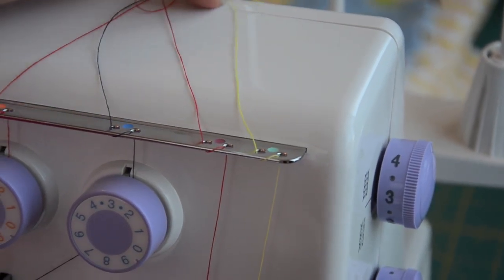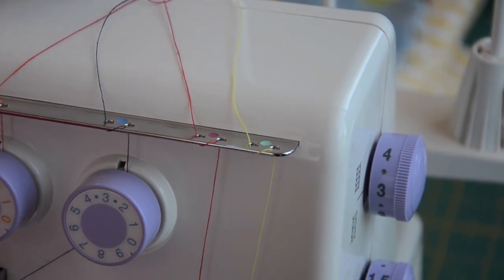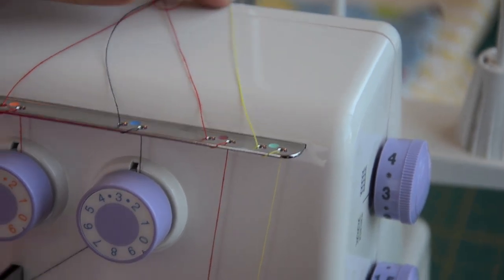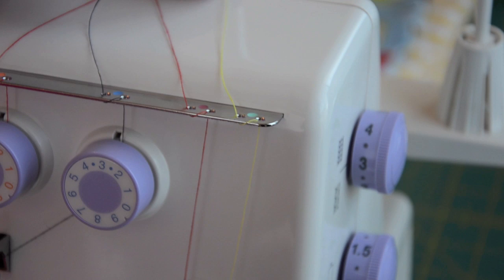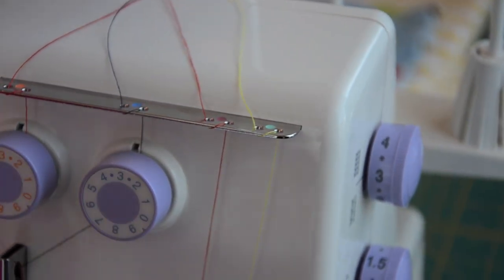So this is the Janome 3434D. It's a Juno by Janome. And this is out of the box. I'm just going to follow the threads through the machine so that I know how to do it later.